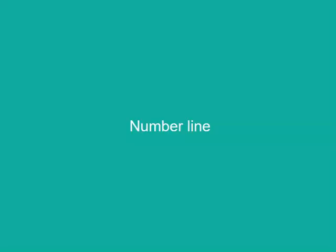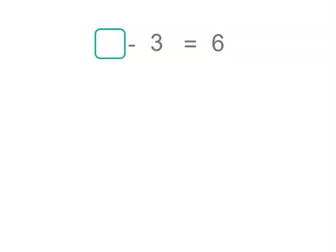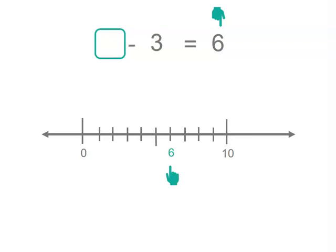Now we're going to use a number line this time. We've got a number and when we subtract 3, we end up at 6. So let's think of a number line and where the number 6 is. So there's 6.